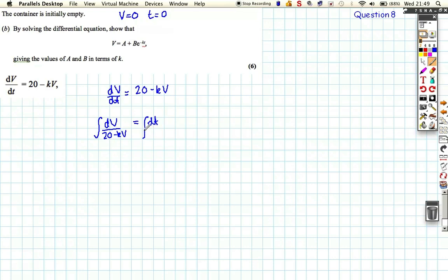So I multiplied by dt and divided by 20 minus kV, and that's how I've separated the V's and the t's, and then I can integrate this now. So on the right-hand side, I'm going to get integral of 1 with respect to t is t plus our constant of integration c, and on the left-hand side, I'm integrating 1 over 20 minus kV. Well, using the reverse chain rule, it's minus 1 over k, ln(20 minus kV).